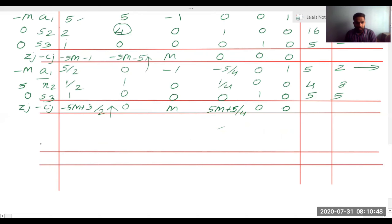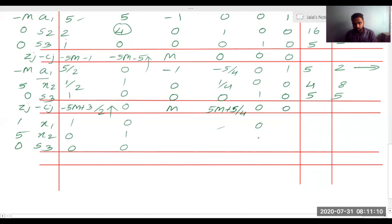In the third iteration, the basis is x1, x2, S3 with Cj values 1, 5, 0. After row operations, x1 has identity column [1,0,0], x2 has [0,1,0], and S3 has [0,0,1]. All ZJ − CJ values are computed: 3/5, 2, and 5M − 3/5. Since M is very large, 5M − 3/5 is positive.